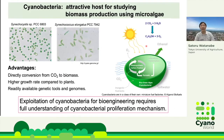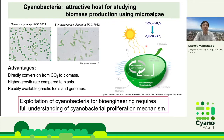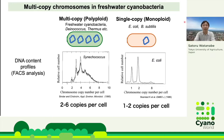Nowadays, there is increasing interest in utilizing cyanobacteria because they can directly convert CO2 with solar energy to biomass. Exploitation of cyanobacteria for bioengineering requires full understanding of cyanobacterial proliferation mechanisms. However, information on proliferation mechanisms in cyanobacteria was limited. It has been reported that bacteria such as E. coli and Bacillus subtilis have single-copy chromosomes per cell. On the other hand, freshwater cyanobacteria such as Synechococcus 7942 and Synechocystis 6803 have multi-copy chromosomes per cell.